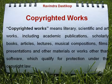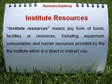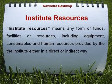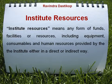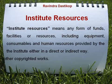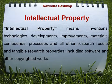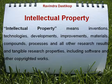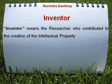In order to do anything you need resources — money, infrastructure, and support. Since an institution is promoting research, institution resources are part of this whole process. Institution resource means any form of funds, facilities, or resources including equipment, consumables, and human resources provided by the institute either directly or indirectly. For example, if research is being done in a centre of excellence, the college puts a lot of money to establish that centre, buy equipment, run and maintain it — all this becomes institution resource. A library is part of institution resource but is not considered the integral resource that directly helps a researcher.